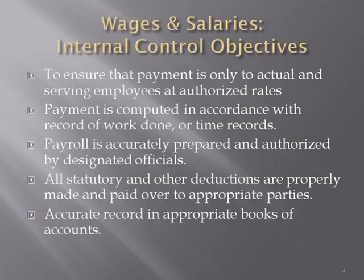The second objective is that any payment made should be in accordance with the record of work done or time record. Payment is generally made in two ways: based on how much work is done — for example, you pay a tailor per shirt stitched, say forty rupees per piece — or based on time, paying per hour or per day. Whichever method is used, a record is kept. So one objective of internal control is that whatever payment is made should be according to that work or time record.